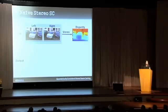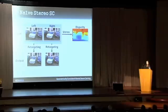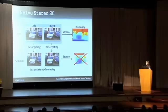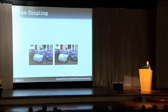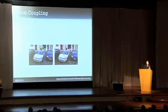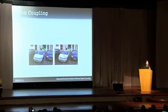A naive extension of single image seam carving to stereo is to apply it independently on each of the images. However, this approach results in inconsistent geometry, and we are not able to perceive depth from the output pair. This can be illustrated with a simple example: one pixel is removed from the left image, but its corresponding pixel is kept in the right image, resulting in an incorrect matching between the images.